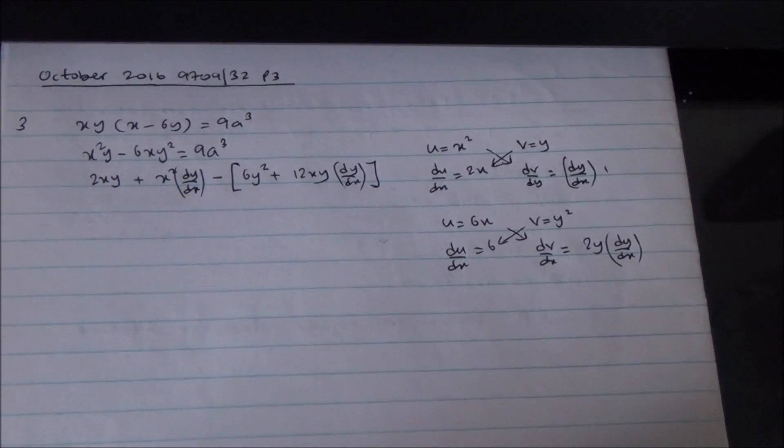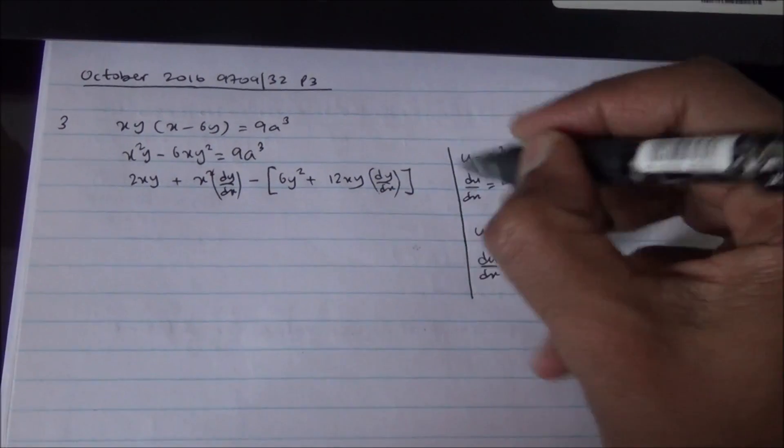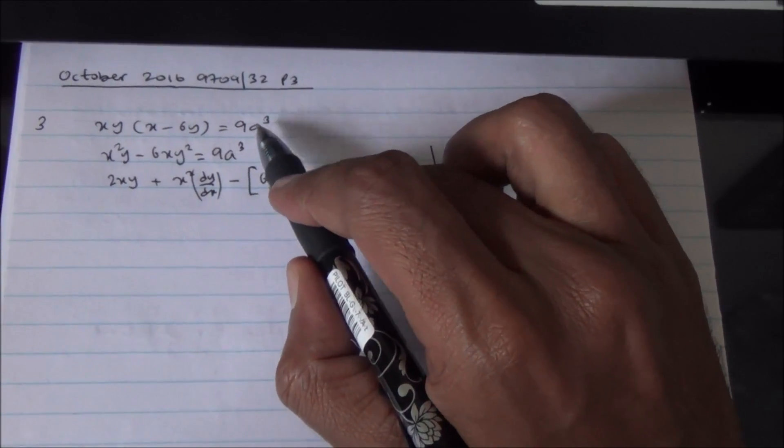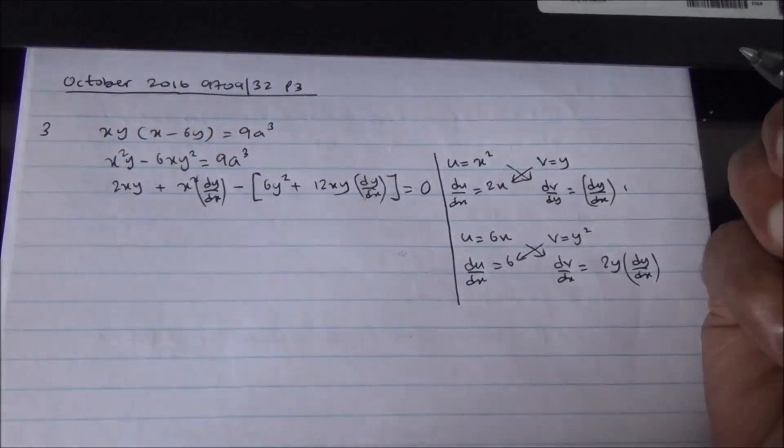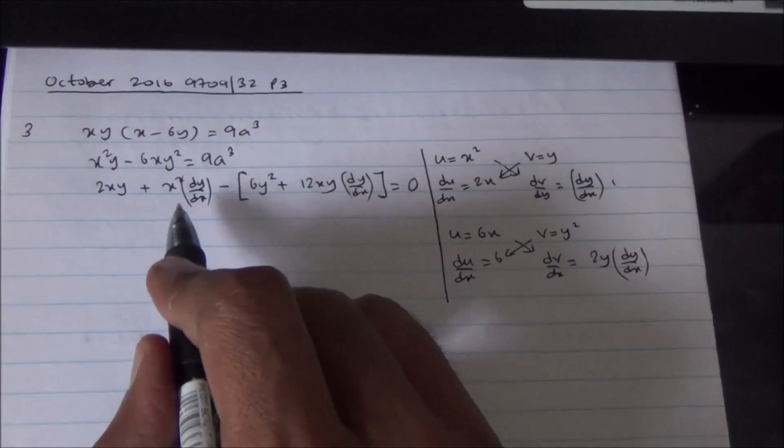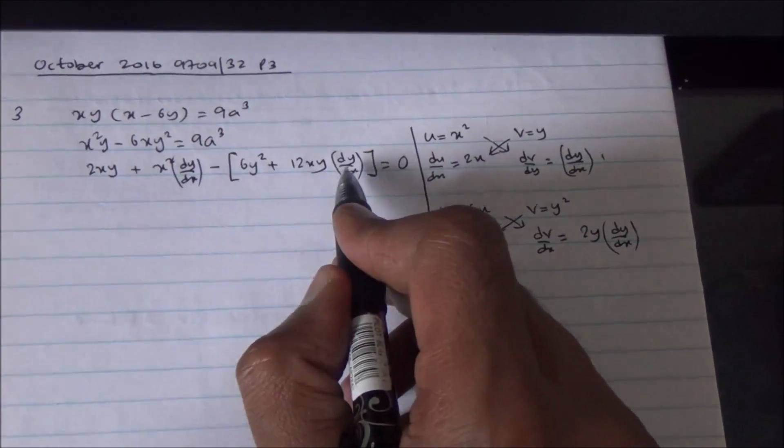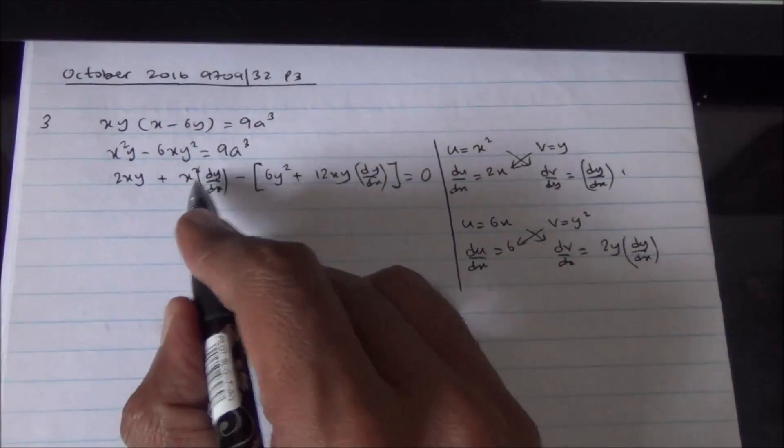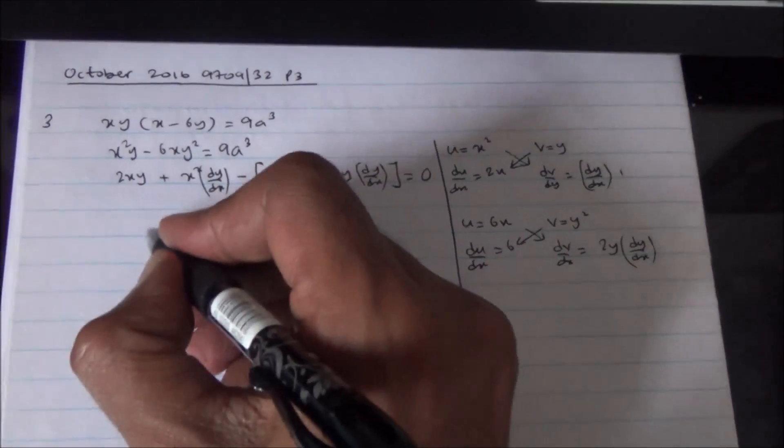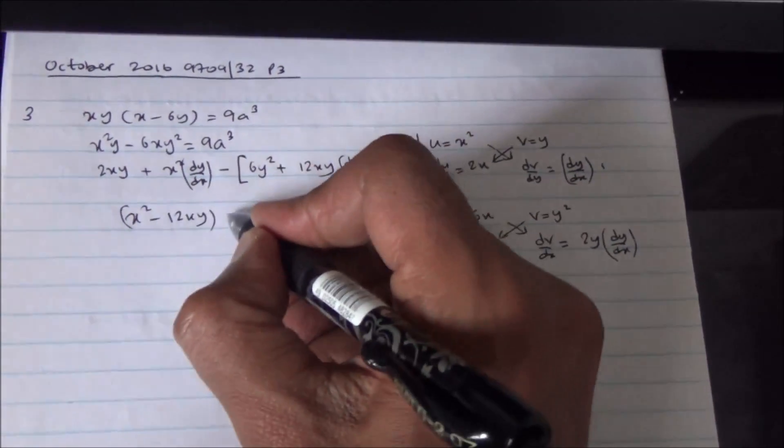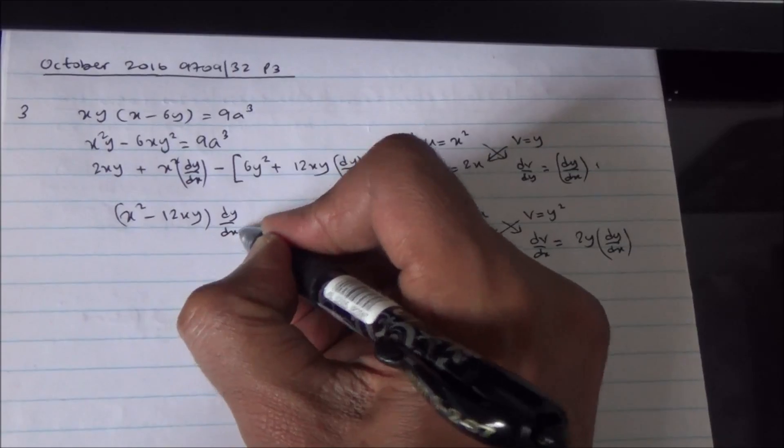Now, from here, we're going to equate all of that to the constant 9a cubed. If you differentiate this, you're going to get 0. So, what do we have for dy by dx? I've got x squared minus 12xy, all of that times dy by dx.